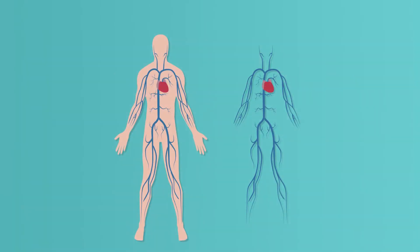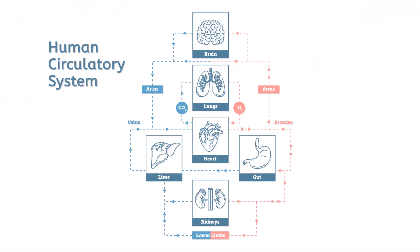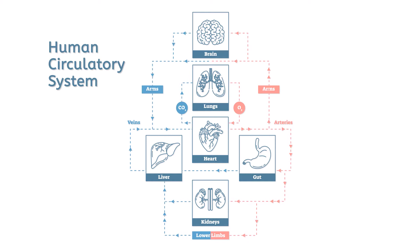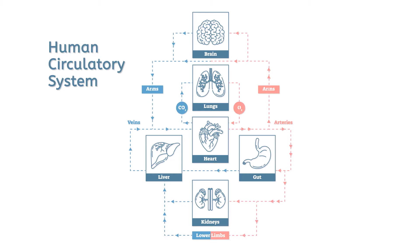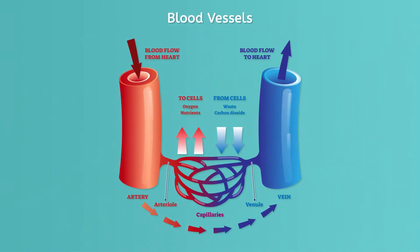Blood vessels that travel away from the heart are called arteries. Oxygenated blood travels throughout the majority of the body via arteries. When blood reaches its intended target, the arteries funnel into tiny capillaries, and the blood cells carrying oxygen drop off that oxygen and pick up carbon dioxide waste from other cells. After this gas exchange, the blood flows through veins that move back toward the heart where the process repeats.